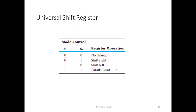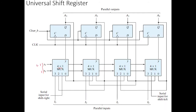When S1 and S0 are both 0, it is no change — we want to retain the information of the register. Therefore, we connect line 0 of the mux to the output of the corresponding flip-flop. So A3 is connected to line 0 of its mux, A2 to line 0 of its mux, A1 to line 0 of its mux, and A0 to line 0 of its mux. This retains the same value of the register.